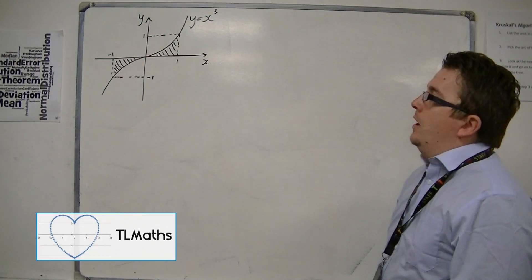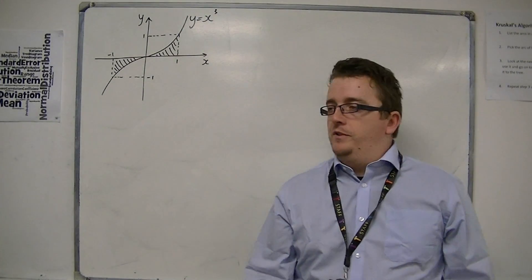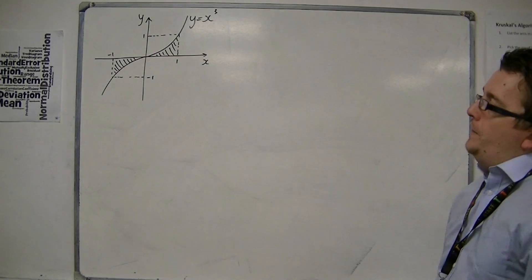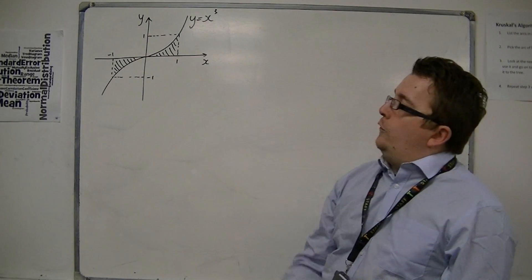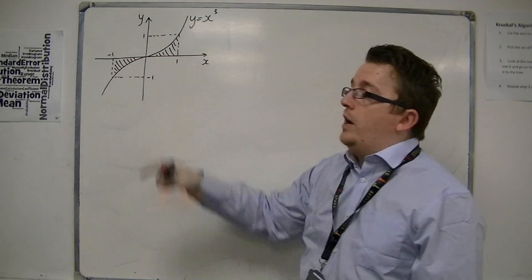So here is a sketch of y is equal to x cubed. Let's say I want to find the area between minus 1 and 1. So these two shaded regions.